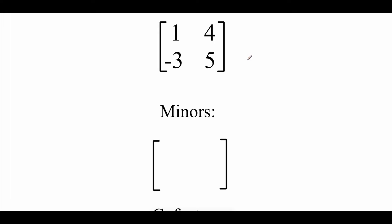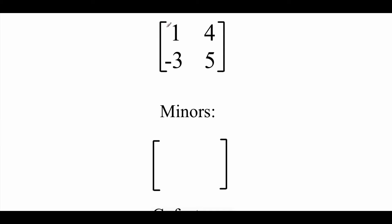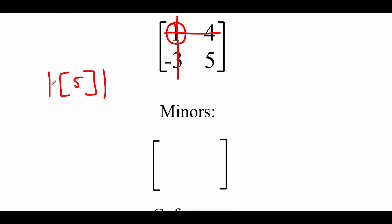Let's look at a 2x2 example. We'll take this 2x2 matrix and work through building a minor matrix, then build a cofactor matrix from that. We do row and column deletion: for the entry in first row, first column, we cross off that first row and first column — we're left with just 5, so the determinant of that 1x1 matrix is 5. So in the first row, first column of our minor matrix, we get 5.